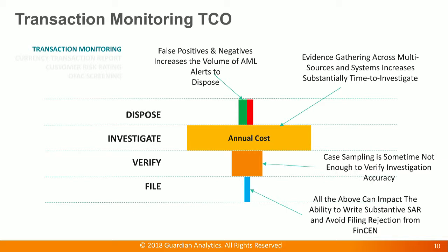This is the total cost of ownership for transaction monitoring. The TCO is separated into four segments: green is the cost to dispose of false positives, red is to dispose of a truly unusual alert, yellow is the cost to investigate, orange is the cost for QA, and blue is the cost to file a SAR. Looking at the picture, we can all see that the yellow — the cost to investigate — consists of the largest cost. Today, we're going to talk about how to improve efficiency for that cost.